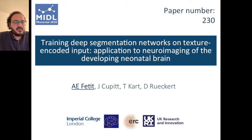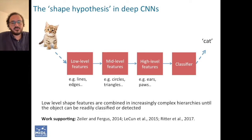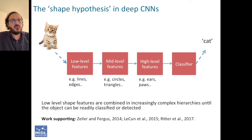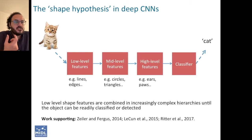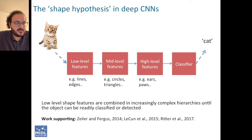One widely used explanation for the effectiveness of CNNs — convolutional neural networks — in classification and also in semantic segmentation tasks is the so-called shape hypothesis, where the idea is that low-level shape features are combined in increasingly complex hierarchies until the object could be readily classified or detected.